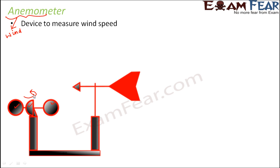They spin as the wind blows. As they spin, the wind speed is displayed on an LCD display. This is a very basic structure, so you do not have the display boards and all that. But when you actually look at an anemometer, it will have an LCD display where you will be able to see the wind speed.